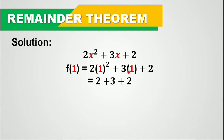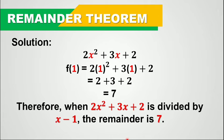Plus 3 times 1, that is 3, plus 2. So we have 2 plus 3 plus 2, which is equal to 7. Therefore, when 2x squared plus 3x plus 2 is divided by x minus 1, the remainder is 7.